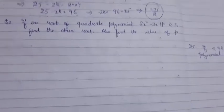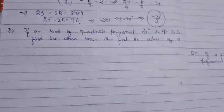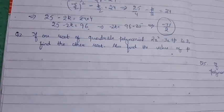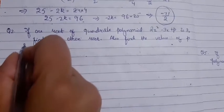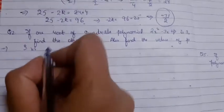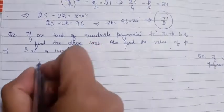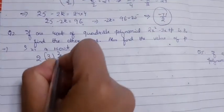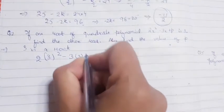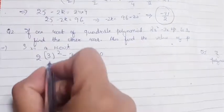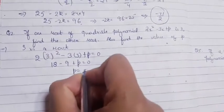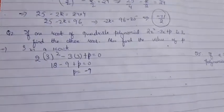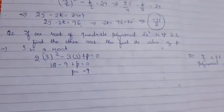Next question: If one root of the quadratic polynomial 2x² - 3x + p is 3, find the other root and find the value of p. Now first we have one root given which is 3. Since 3 is the root, we will put the value in this polynomial: 2(3)² - 3(3) + p = 0. That's 18 - 9 + p = 0, so p = -9.